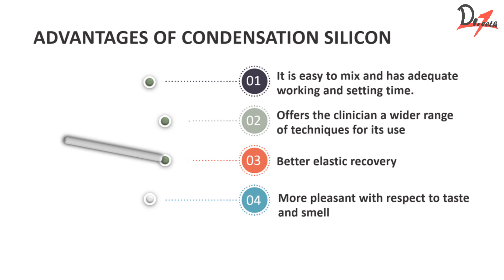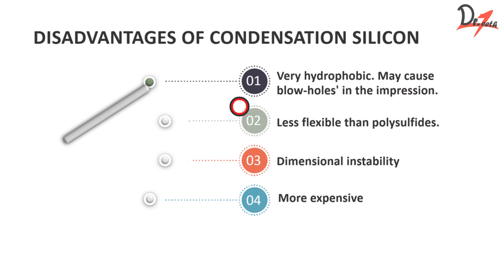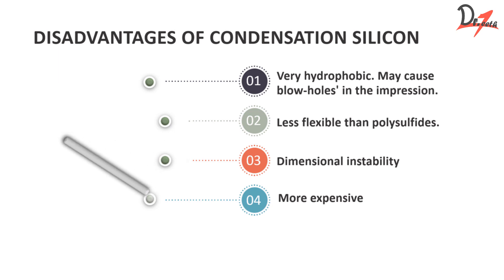The disadvantages are: it is very hydrophobic, meaning it repels moisture — therefore before taking the impression the mucosa must be air-dried, otherwise blow holes will appear in the impression; it is less flexible than polysulfide; it has dimensional instability due to the alcohol byproduct; and it is more expensive.